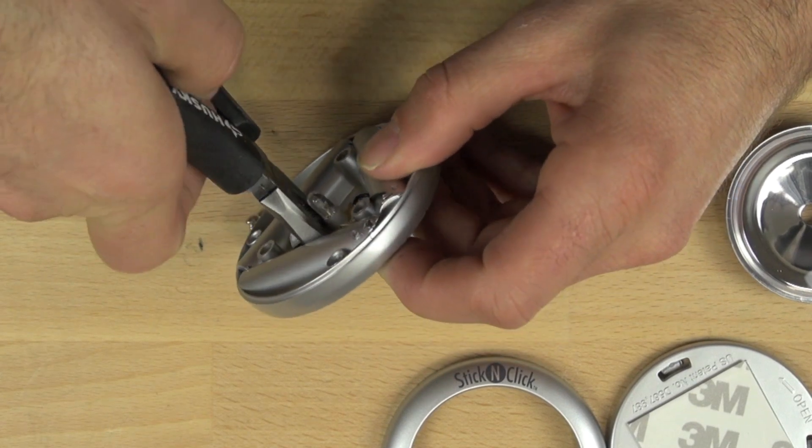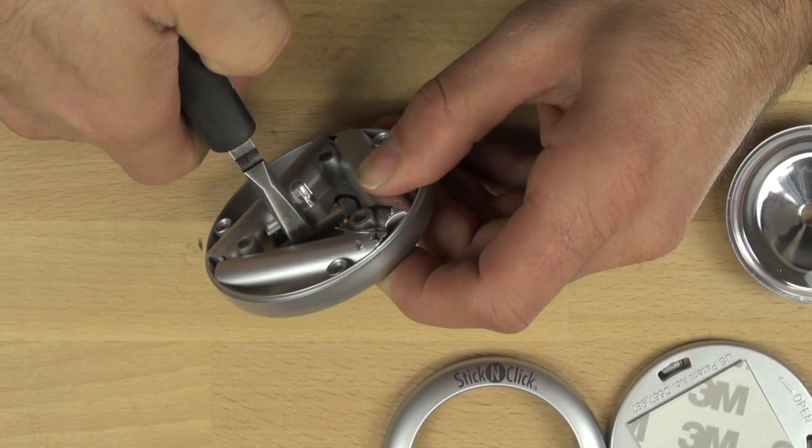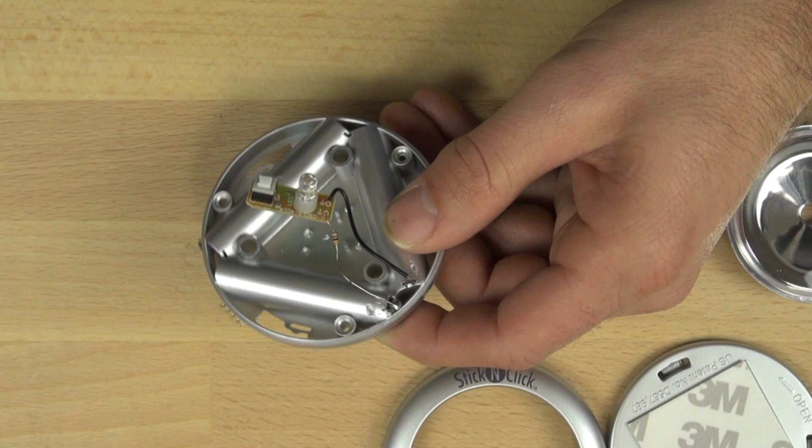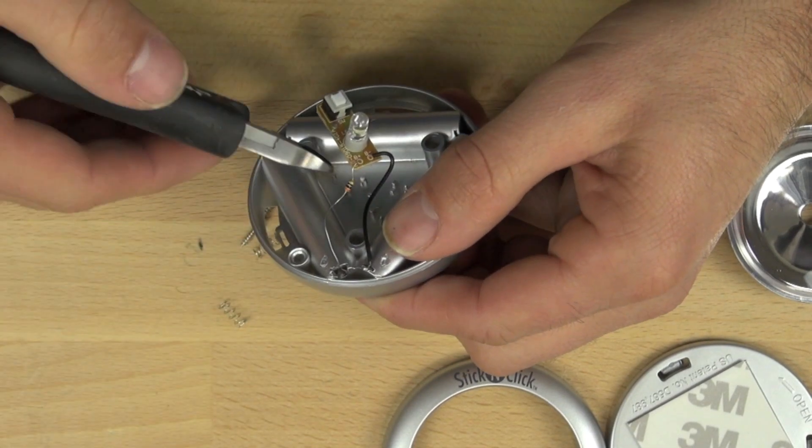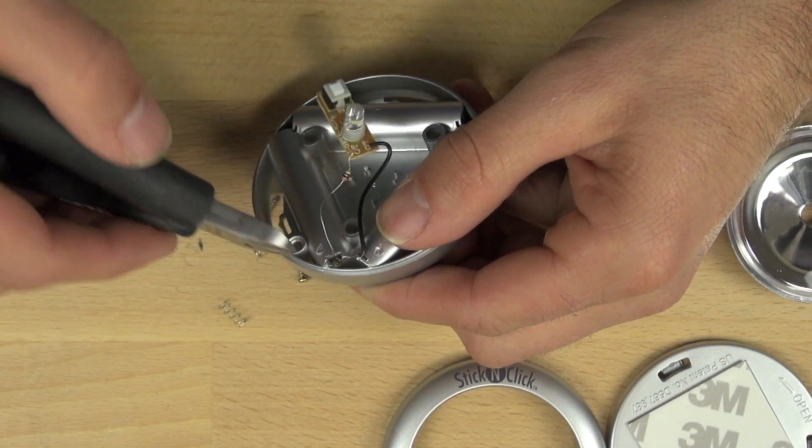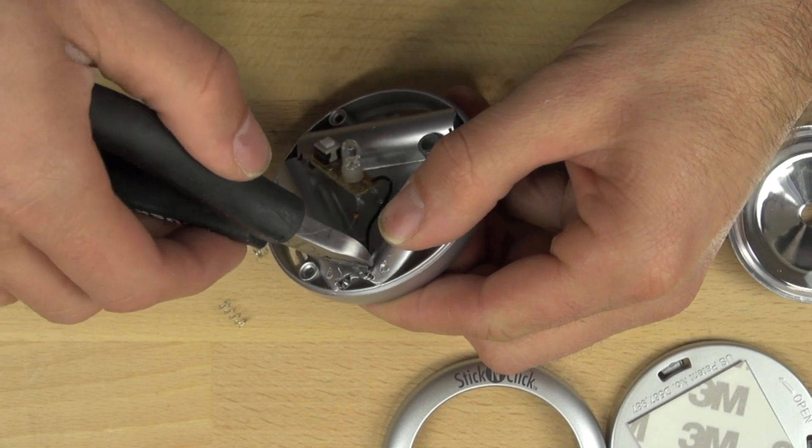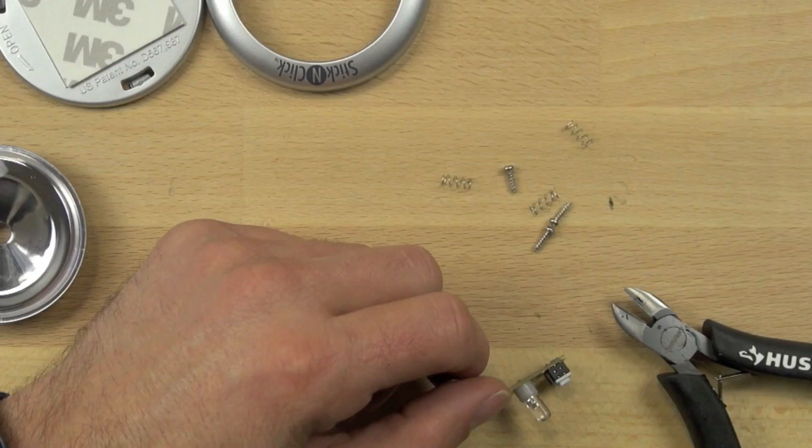So the first thing we're going to do is take our pliers and just pop the board out. You don't have to pull really hard but you can just break those plastic connections that are holding it on. And then we want to take our nipper pliers and cut the wires that are holding the switch in place.